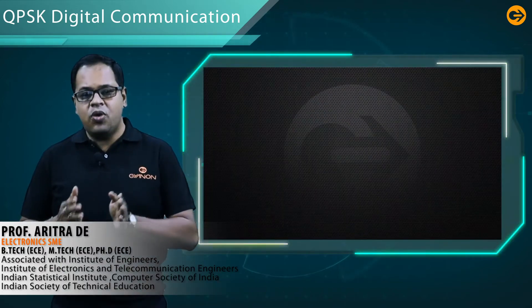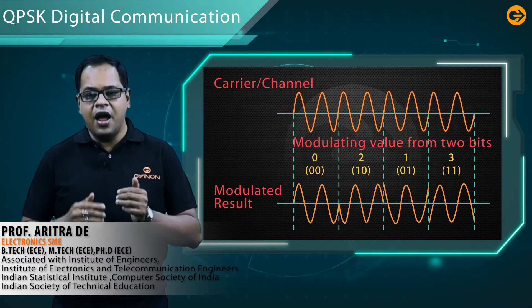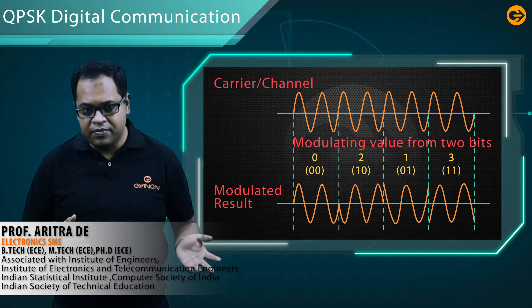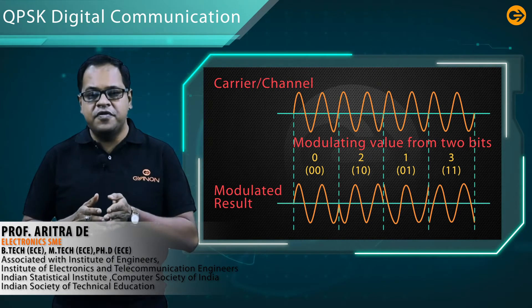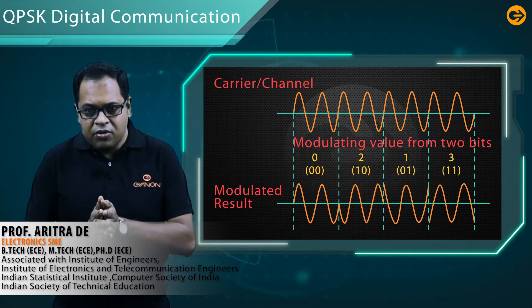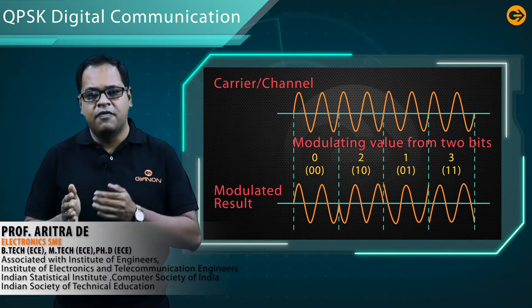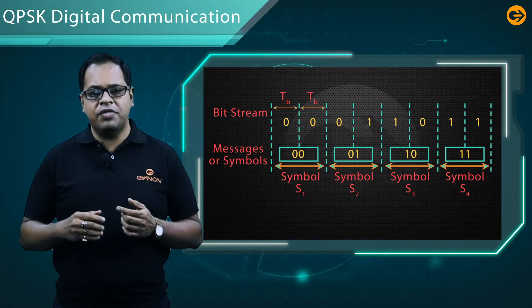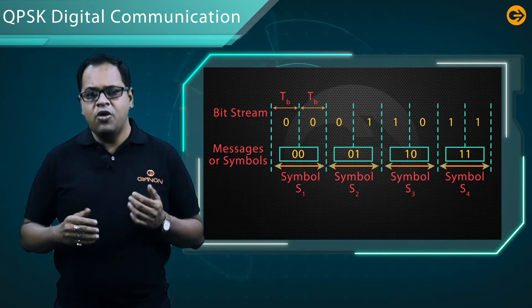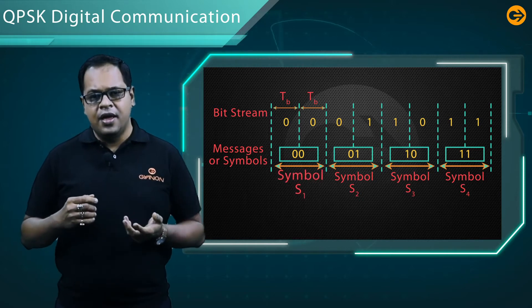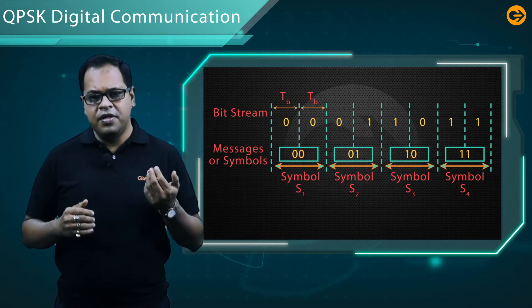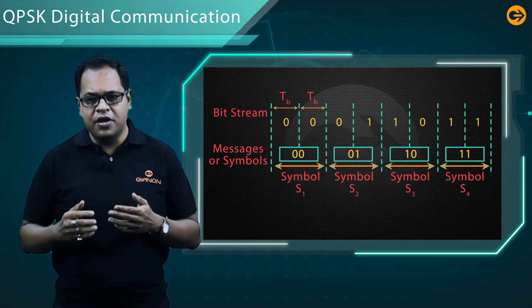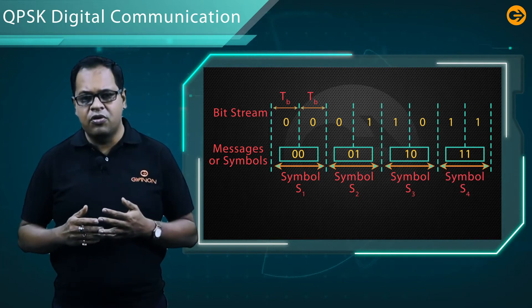In Quadrature Phase Shift Keying, or QPSK, a high frequency signal is used as a carrier. There are four phase shifts: for 00, 10, 01, and 11. QPSK may consist of symbols: symbol S1 (00), symbol S2 (01), symbol S3 (10), and symbol S4 (11).